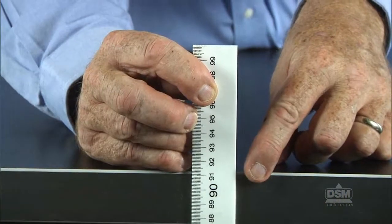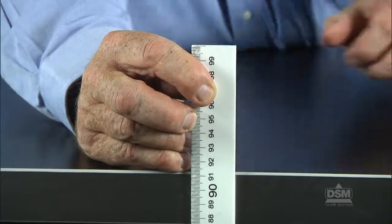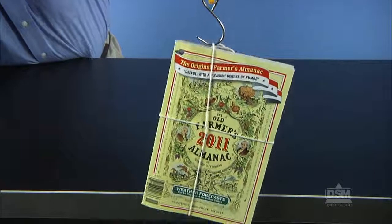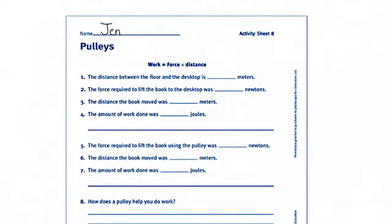Have each team choose a book to lift using the pulley and instruct them to measure the distance from the floor to the top of their desks. Then tell students to tie the string around the book and use the spring scale to lift the book from the floor to the desktop. Remind the students to record the force required to lift the book, the distance the book was lifted, and to calculate how much work was done.